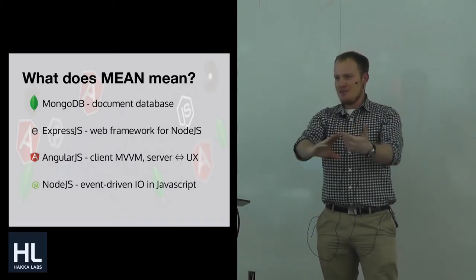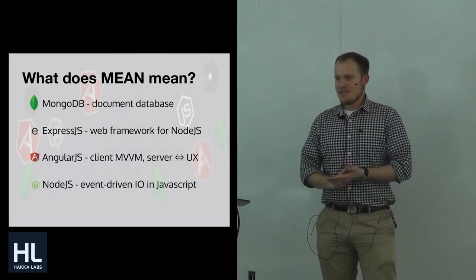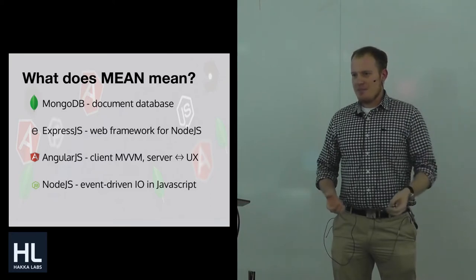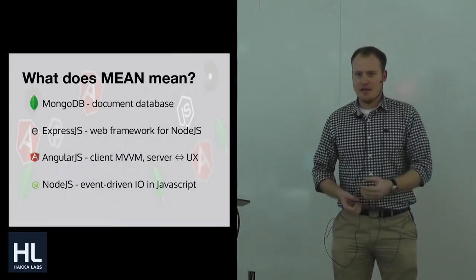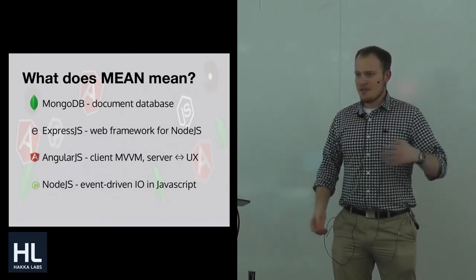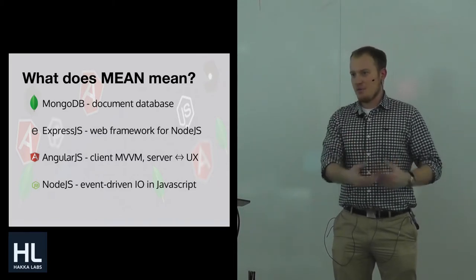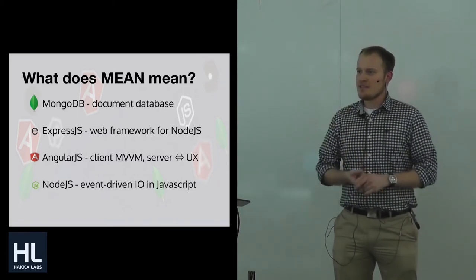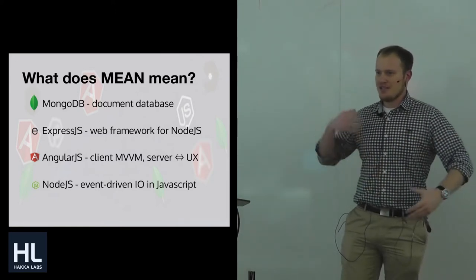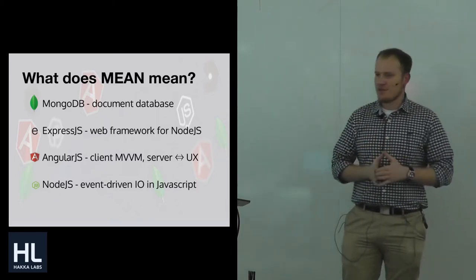Let me talk about what the MEAN stack actually is for those who aren't familiar. It stands for MongoDB, ExpressJS, AngularJS, and NodeJS. MongoDB is a document database that seeks to bridge the gap between a document store like Redis and a richly featured SQL database. You get the simplicity and elegance of storing objects with the performance of a Redis type solution, plus the rich features and aggregation of MySQL or Postgres.